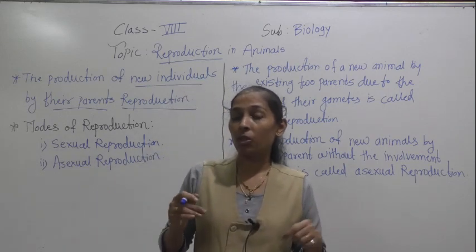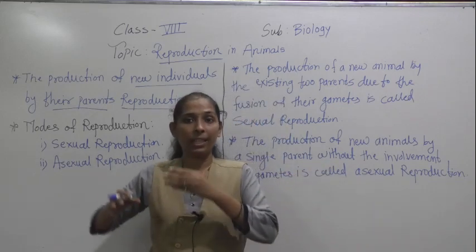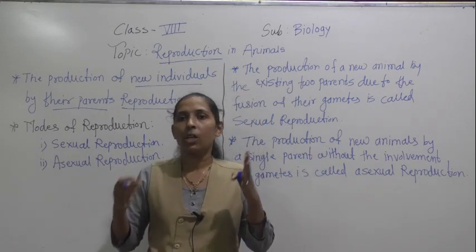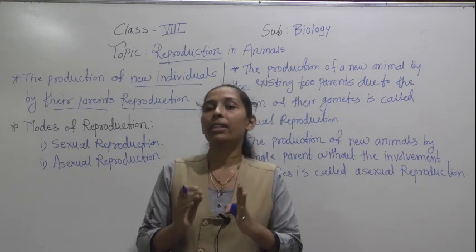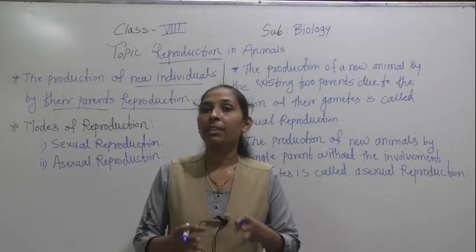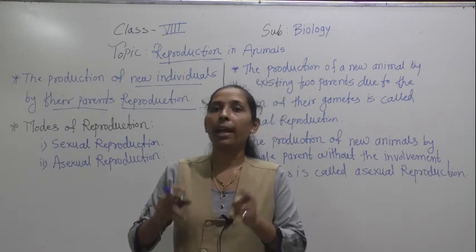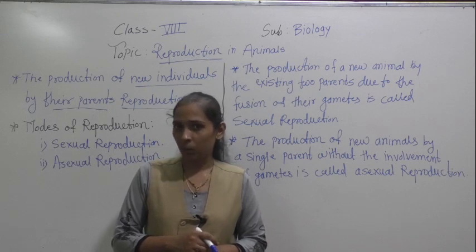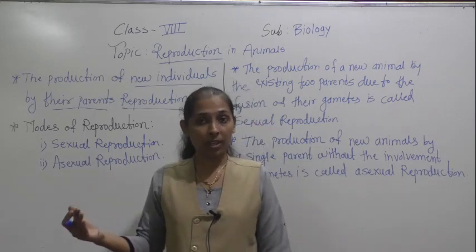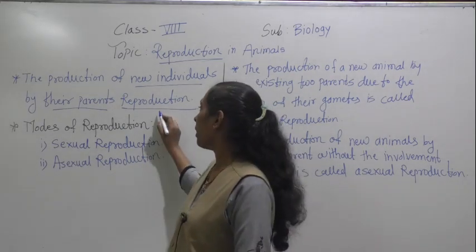You have seen so many animal babies. If a dog is there, then you have seen the puppies, and that puppy exactly looks like a dog. If a cat is there then we have kittens. Like that, different animals have their babies which we call by different names. An activity is given in your textbook — table number 9.1 — which you have to complete. Different animals have different types of babies, and our babies exactly look like their parents, and that process is called reproduction.